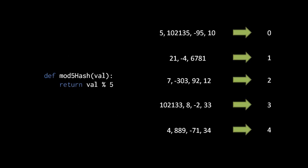Perhaps the simplest case of a hash function is one that simply returns a modulus of the input. Here, for example, our hash function mod5 hash takes an input value and returns simply the modulus of that value by 5. So for the inputs 5, 100, 2135, negative 95, and 10, those all produce the hash 0. The inputs 21, negative 4, 6781, those all produce the hash 1. 7, negative 303, 92, and 12 produce hash 2, and so forth. There are actually only five different possible outputs: 0, 1, 2, 3, and 4.